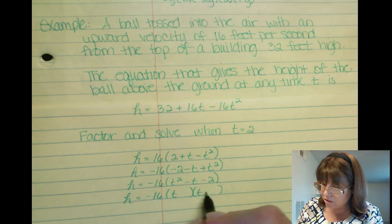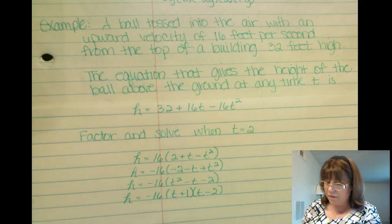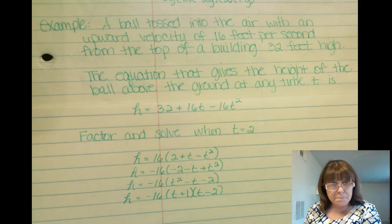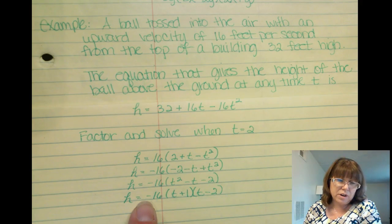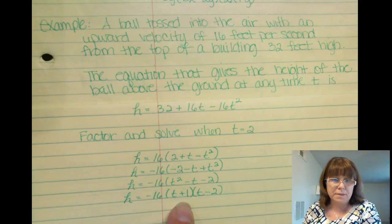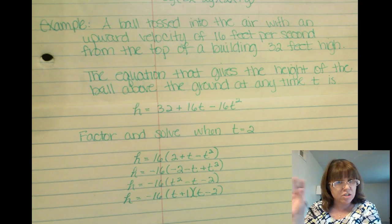So I know the negative is on the 2, because my middle term is negative. But I really kind of don't want that negative hanging out front. It's okay, if you want it out front you can. Otherwise I can distribute it back into one of these terms. But I'm going to leave it as is because we're just solving for t.